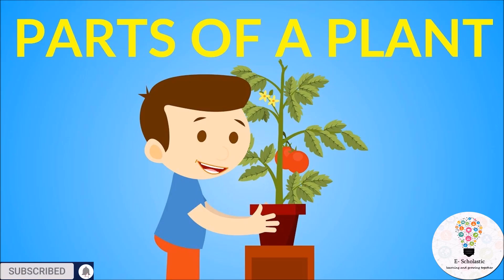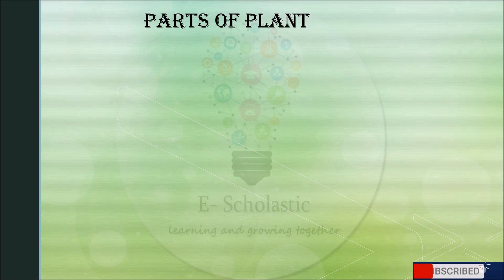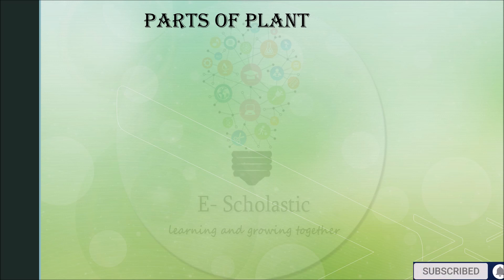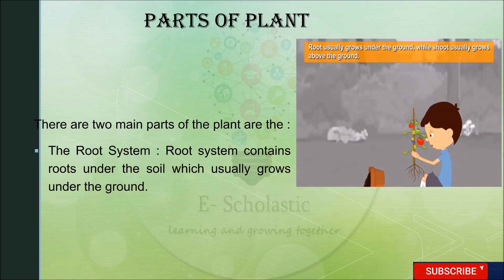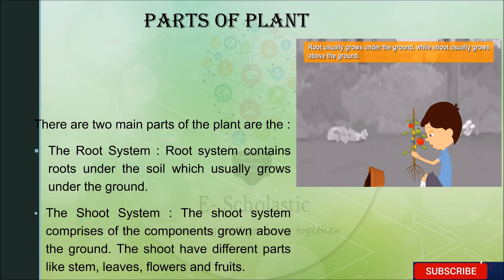Let's start by understanding the various parts of a plant — that is, how we divide or classify the various sections of a plant. The two main parts of the plant are the root system and the shoot system. Let's understand each of these one by one, starting with the root system.